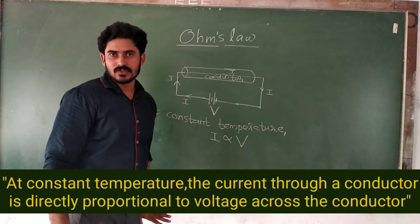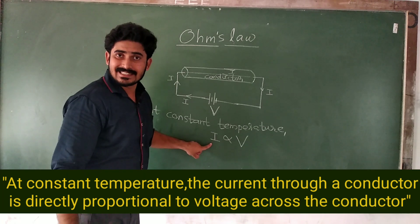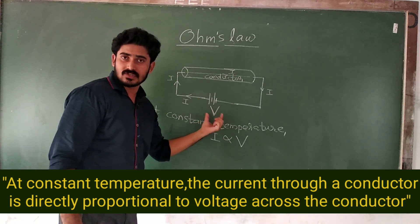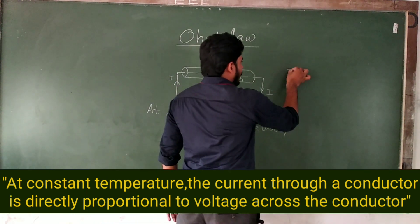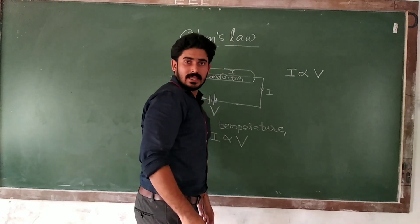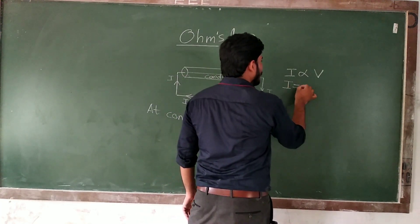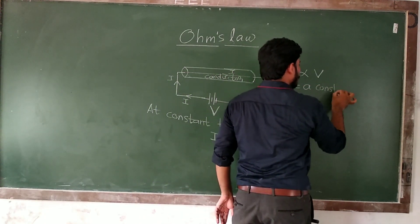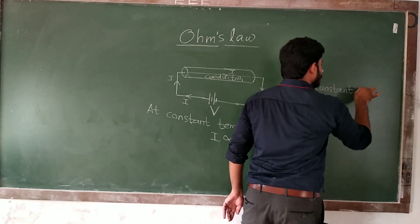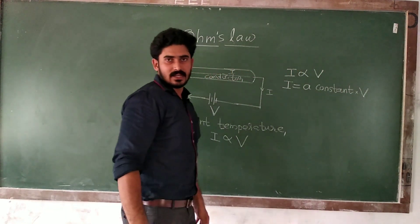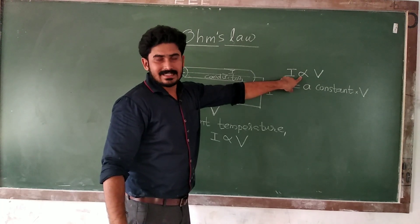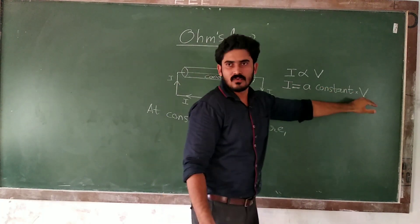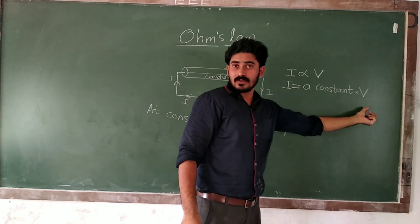I is directly proportional to the voltage. The current passing through the conductor is directly proportional to the voltage applied. I am rewriting this: I is proportional to V. In order to avoid the proportionality, I am taking a constant and multiplying that constant with the term on the right side — a constant into voltage.